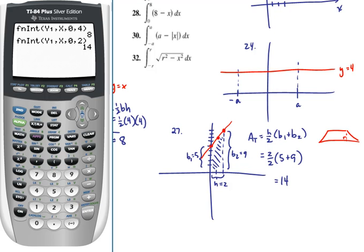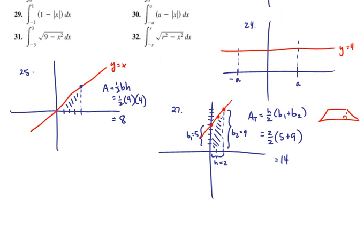So I'll go on to another example, and this time example 29. We want the integral from negative 1 to 1 of 1 minus absolute value of x. Well, absolute value of x makes the v shape, and absolute value of x plus 1 would shift it upwards.